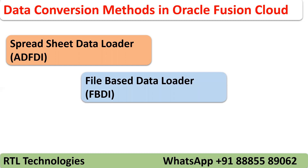FBDA is used to load data into Fusion Applications. What is the difference between Spreadsheet Data Loader and FBDA? Spreadsheet Data Loader directly loads data into the applications — the spreadsheet itself does the validation and uploads to the base tables. With FBDA, we have to run two programs: one program to load the data from your Excel sheet templates into interface tables, and another program to load the data from interface tables to base tables.